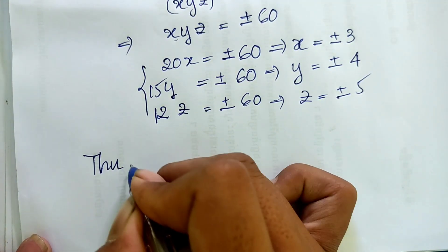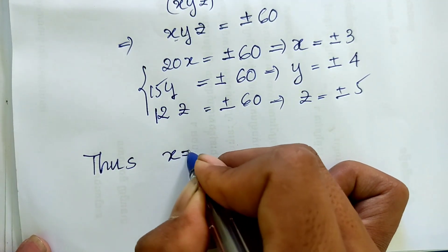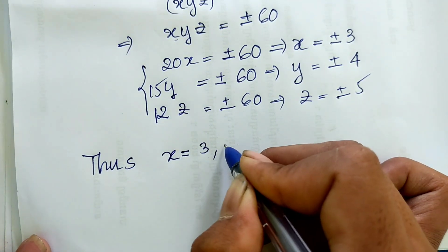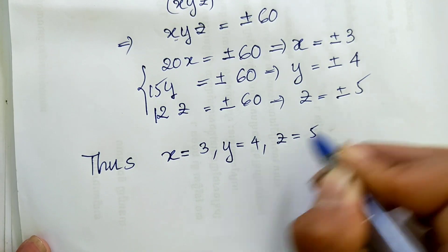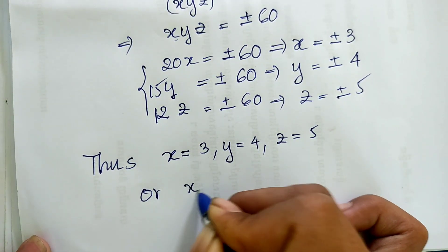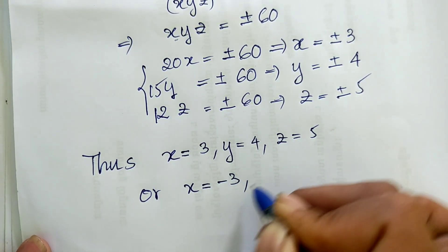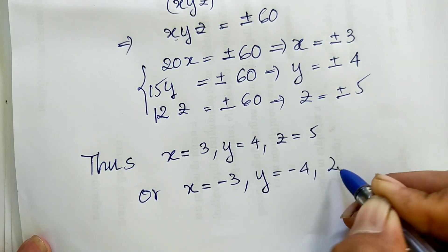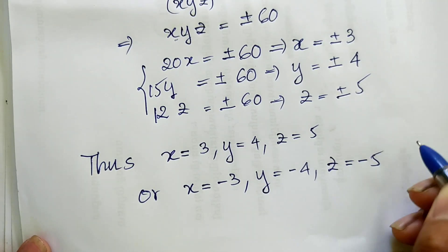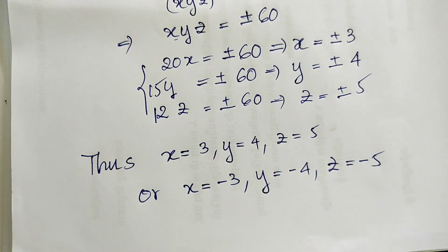So our solution is: h equals 3, y equals 4, and z equals 5, or h equals minus 3, y equals minus 4, and z equals minus 5. Thank you for watching! If you like my videos, please don't forget to subscribe to my channel for more exciting videos. Goodbye!